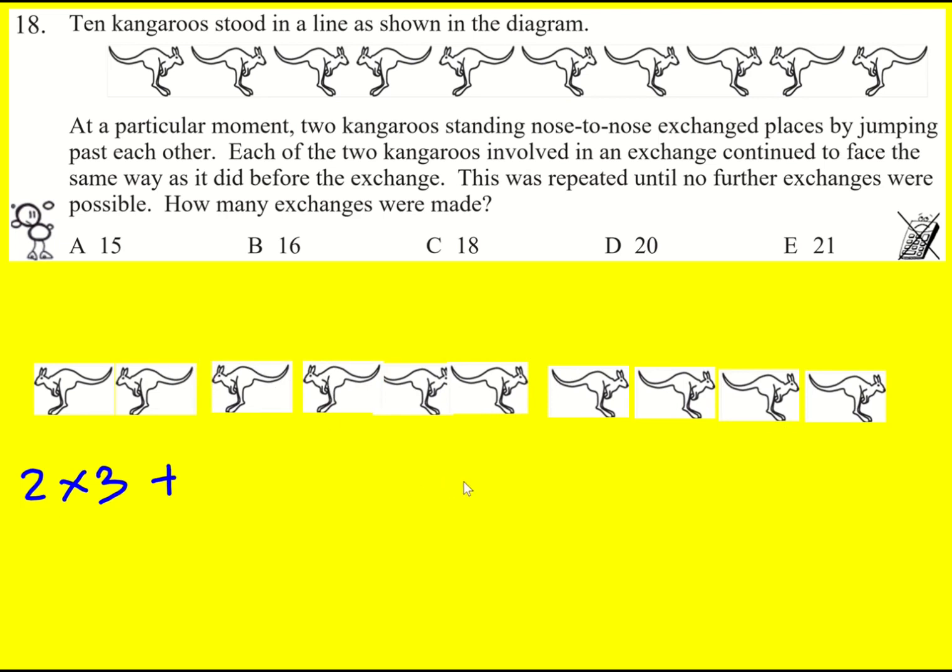That will mean we can't do any more after that. We've got four facing to the left and six facing to the right. Overall, this gives us 18.